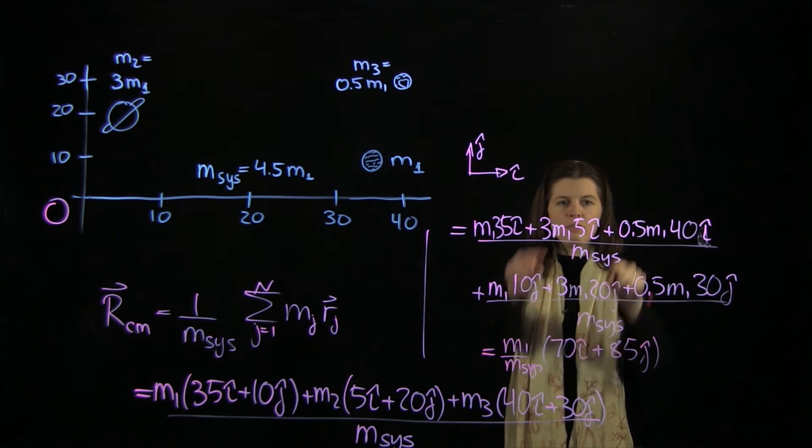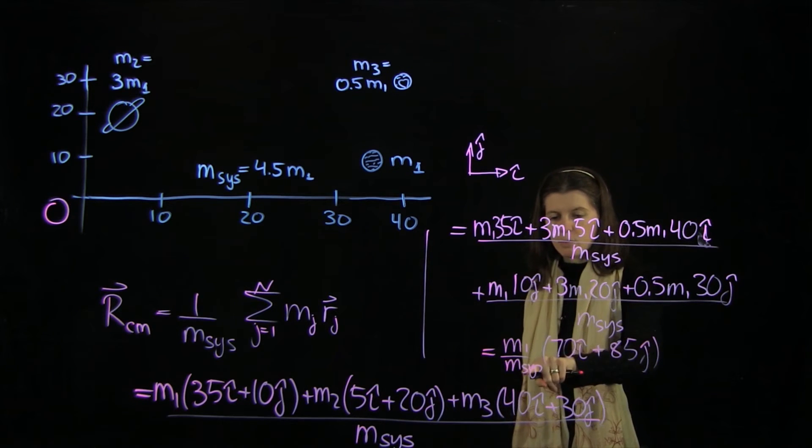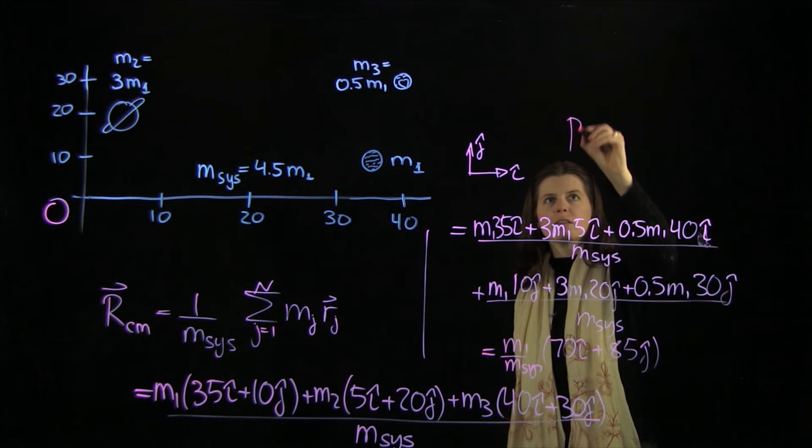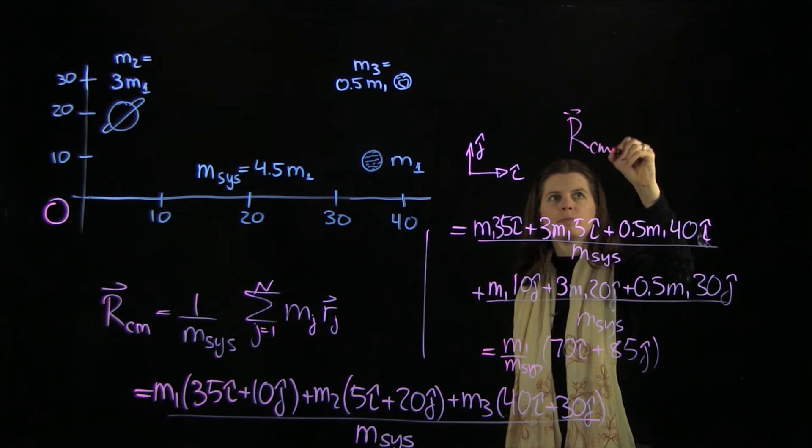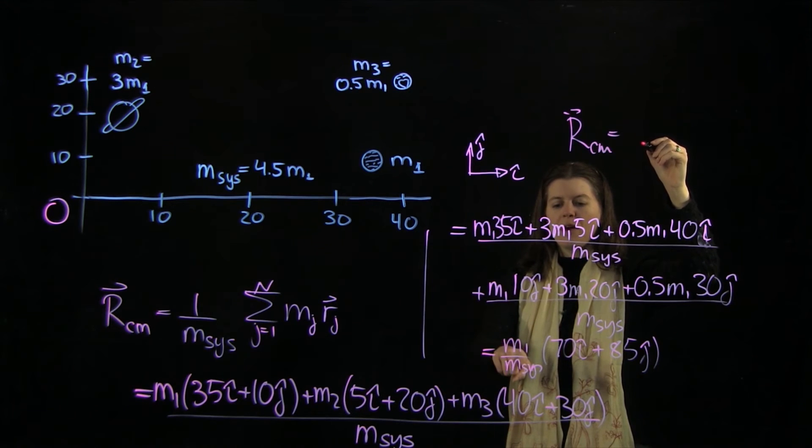So the 70 comes from this term, the 85 comes from this. I put it back together, and now we need to plug in this one here. And so we will get in the end that our cm equals m over 4.5 m.